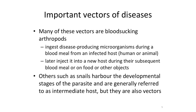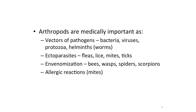Many of the vectors involved in transmission of diseases are blood-sucking arthropods. They ingest the pathogens or disease-causing microorganisms during a blood meal from an infected host, and then later inject them into the next host. When an arthropod sucks blood, it picks up blood plus the pathogens, and then injects them into the next person when it goes for a second blood meal. Others, such as snails, harbor the parasite's developmental stages and are usually referred to as intermediate hosts, but they are also vectors because they maintain the parasite during part of its life cycle. Arthropods are the most important vectors of diseases.